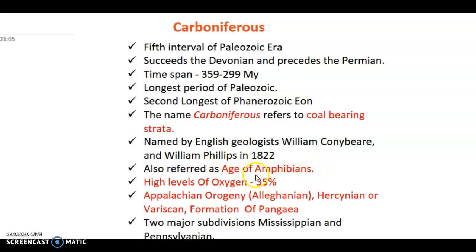The Carboniferous is also referred to as the age of amphibians, as amphibians diversified greatly during this time. In the Devonian video I talked about the evolution of fish and how tetrapods came into existence from lobed-fin fishes — you can check that video later. A most significant feature was the high level of oxygen: approximately 35%, representing a major jump from the Devonian's roughly 15–16% — nearly a 20% increase in atmospheric oxygen levels.